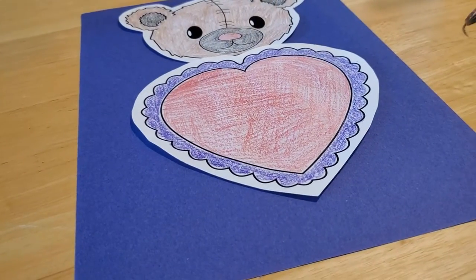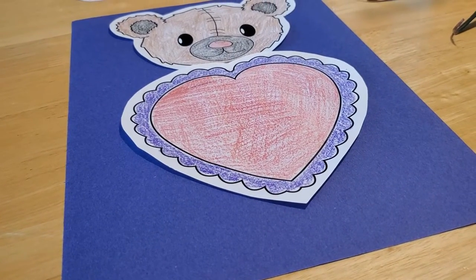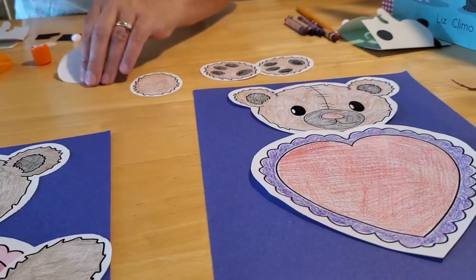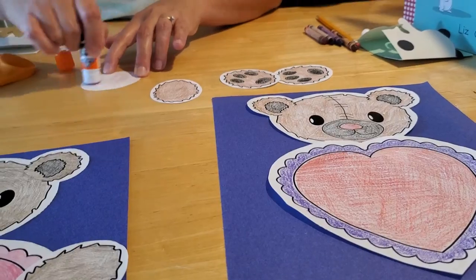If you don't want to eat glue, so be careful. You want to lay your heart just over the bottom of the bear's head. You want to make sure it overlaps a little bit because we want to give the illusion, the impression, that our bear is holding the heart just under his face.